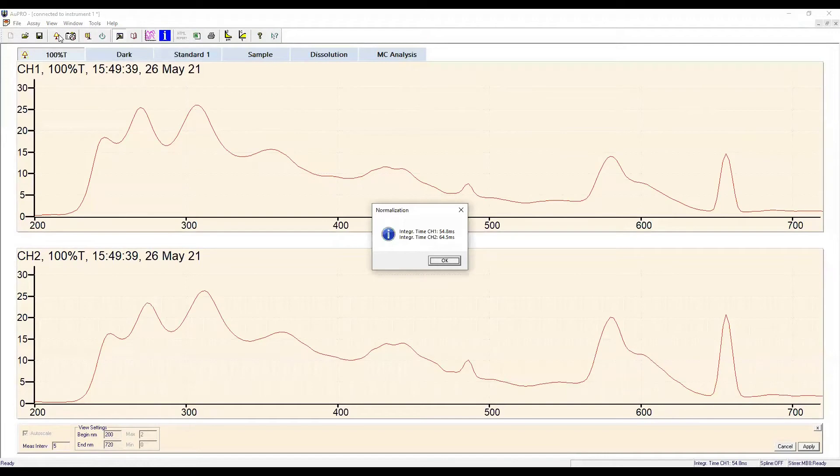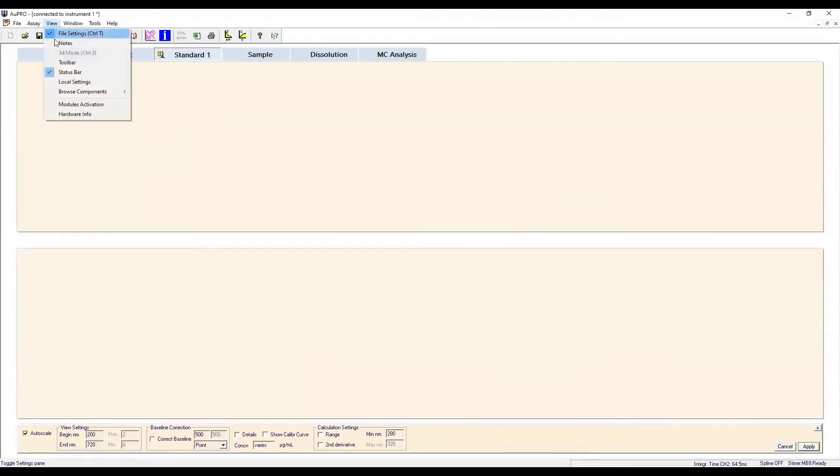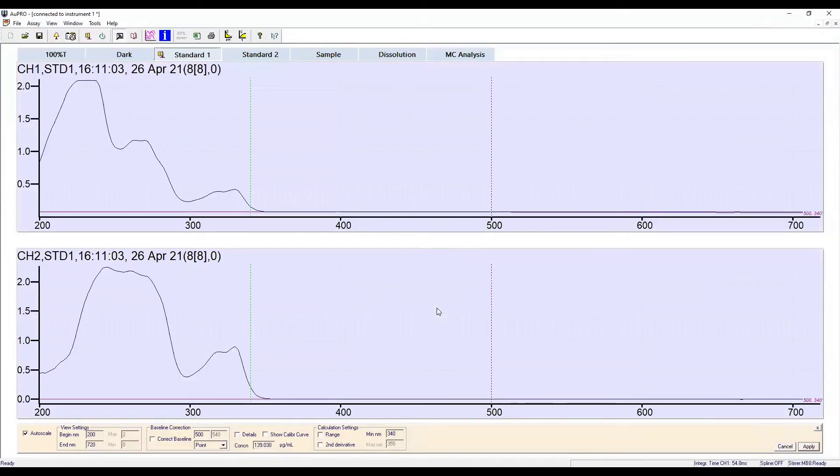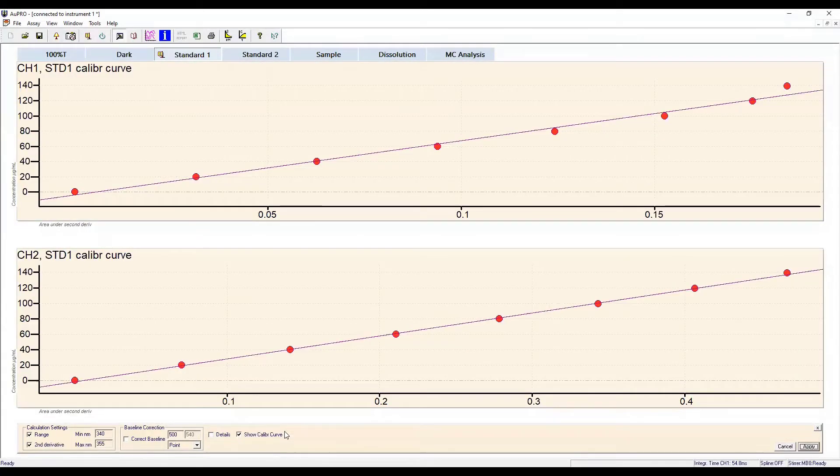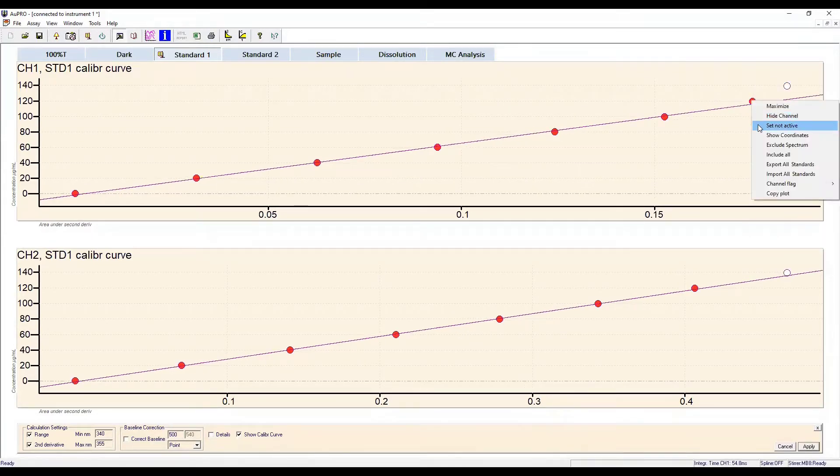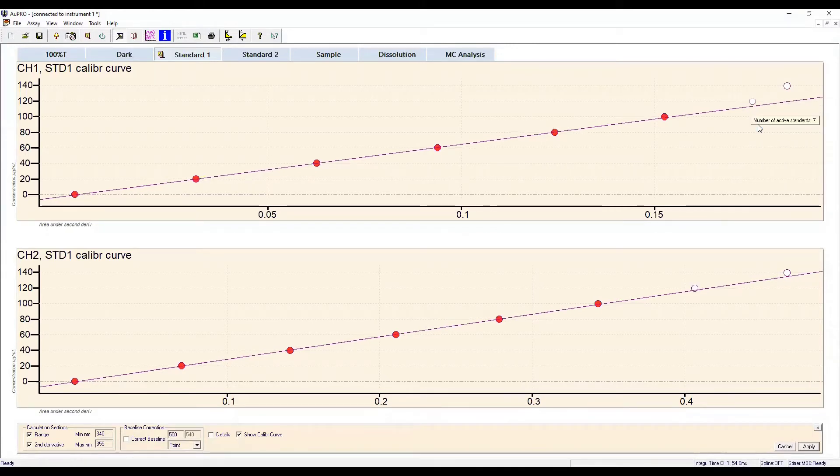Once the background is collected, previously collected standard spectra are imported. The spectra shown here are of naproxen. Channel 1 shows the spectrum and calibration of naproxen collected in pH 5 aqueous buffer. This will be used for our donor chamber. Channel 2 represents the sample in acceptor sink buffer and will be used to quantitate our acceptor chamber.